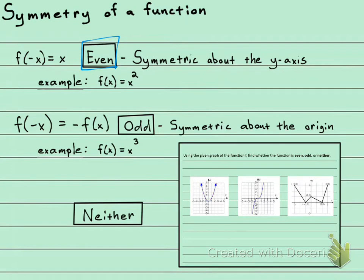It could be odd, which is f(x) = x³, and that's where it's symmetric about the origin. You would take this part here, flip it once about the y-axis, and then flip it again about the x-axis, and you'd end up with that part.